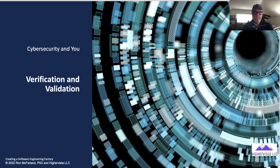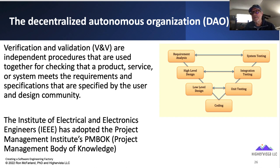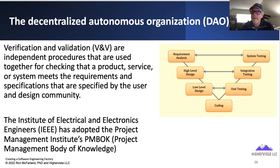Verification and validation — V&V — is really married to quality. I've taught a few courses on this stuff; it's leaning towards verification and validation of software engineering projects. The IEEE diagram on the right shows: requirements analysis, high-level design, low-level design, coding on one side; and system testing, integration testing, unit testing on the other. Coding from the bottom up, you get the requirements analysis through to system testing. There are implied iterative aspects to this. The SSDLC, SDLC, and verification and validation kind of work hand-in-hand. The IEEE has adopted the Project Management Institute's PMBOK as part and parcel of this.